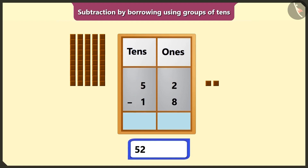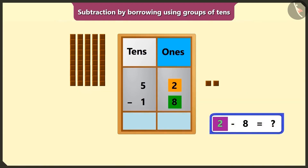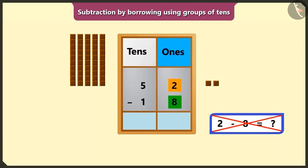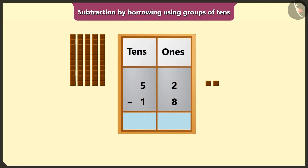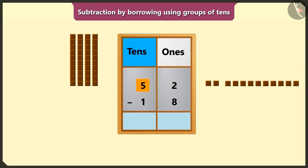Here we have to perform 52 minus 18. First of all, we will perform subtraction of the numbers in the box of ones. But here 2 is smaller than 8, so we cannot subtract a big number from a small number. Here we will borrow 1 ten from the number 5 in the box of tens — the number in the ones place can borrow from its neighbour in the tens box.